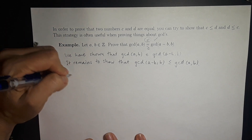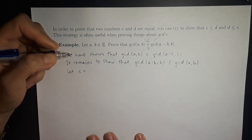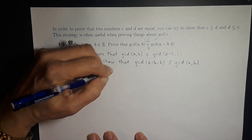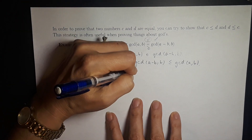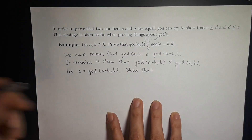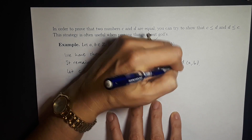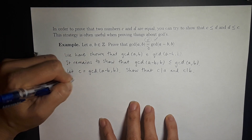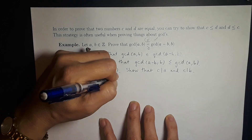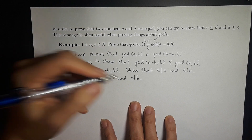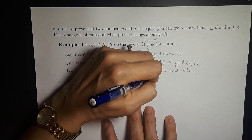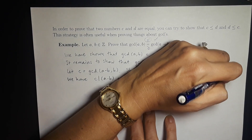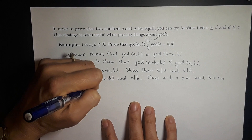Here's how it goes. Let C be the GCD of a minus b and b. We want to show that C is a common divisor of a and b — in other words, that C divides a and C divides b. Since C is the GCD of a minus b and b, we have that C divides a minus b and C divides b, so we're already halfway there. Thus, a minus b equals C times m and b equals C times n for some integers m and n.